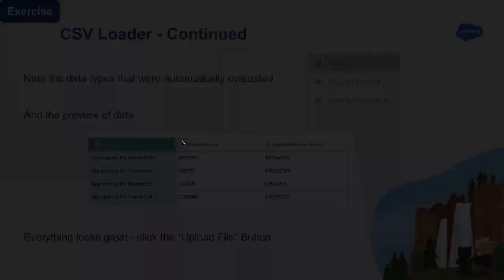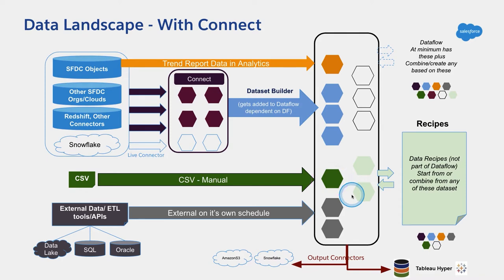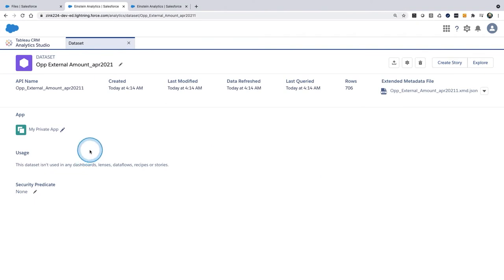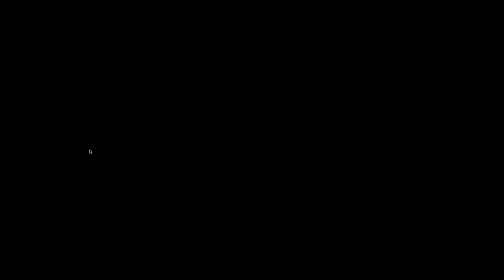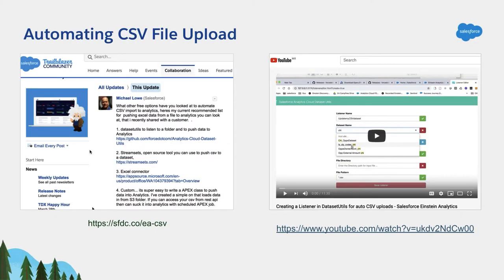Going back to the diagram, notice that this dataset is sitting right here in green — it's not in the data flows because it was a manual, one-time upload. One time done, and the data is ready. That's method number one: CSV.